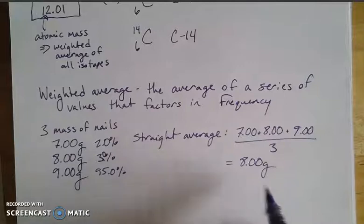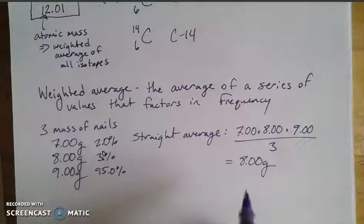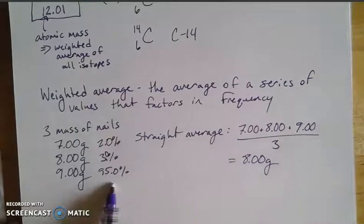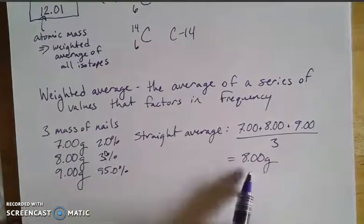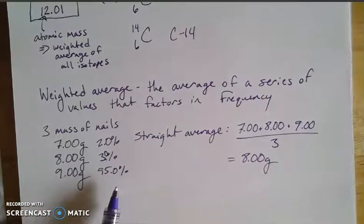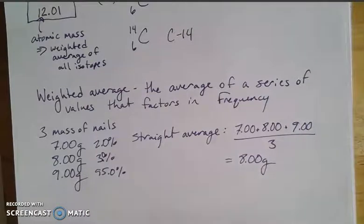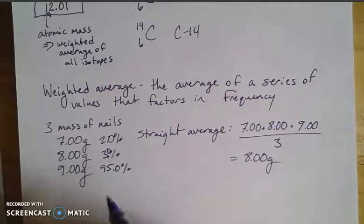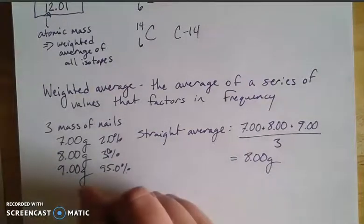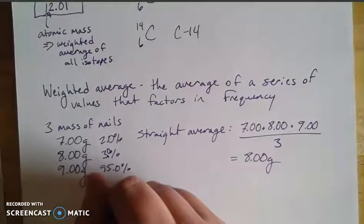Saying the average is 8 grams doesn't actually reflect those frequencies. It doesn't account for the fact that 95% of the time I'm finding 9-gram nails. So instead, you need to treat these percentages as a multiplier and add those up to get a weighted average.